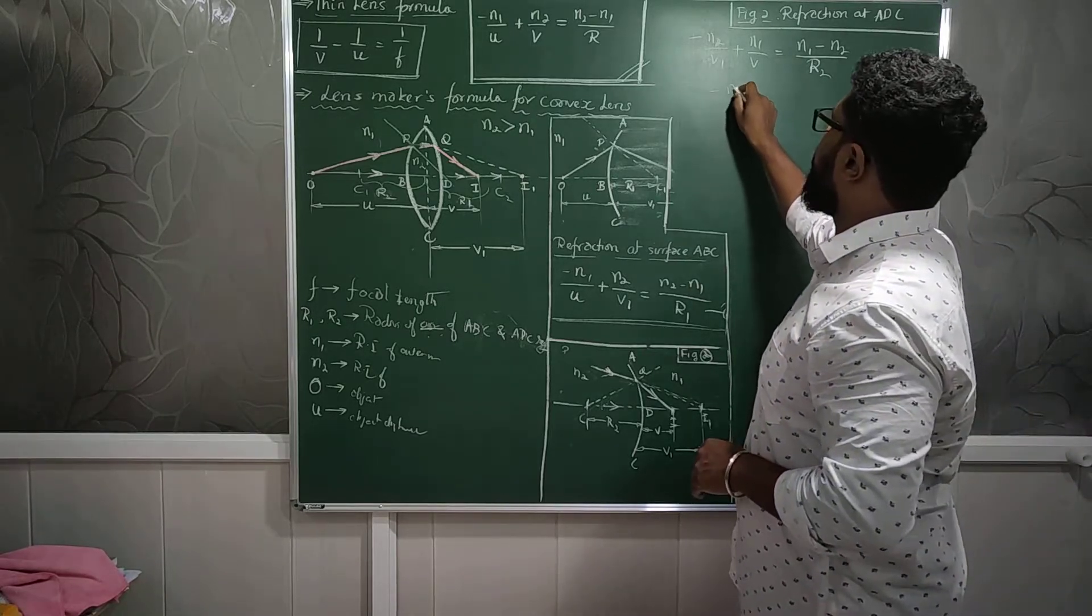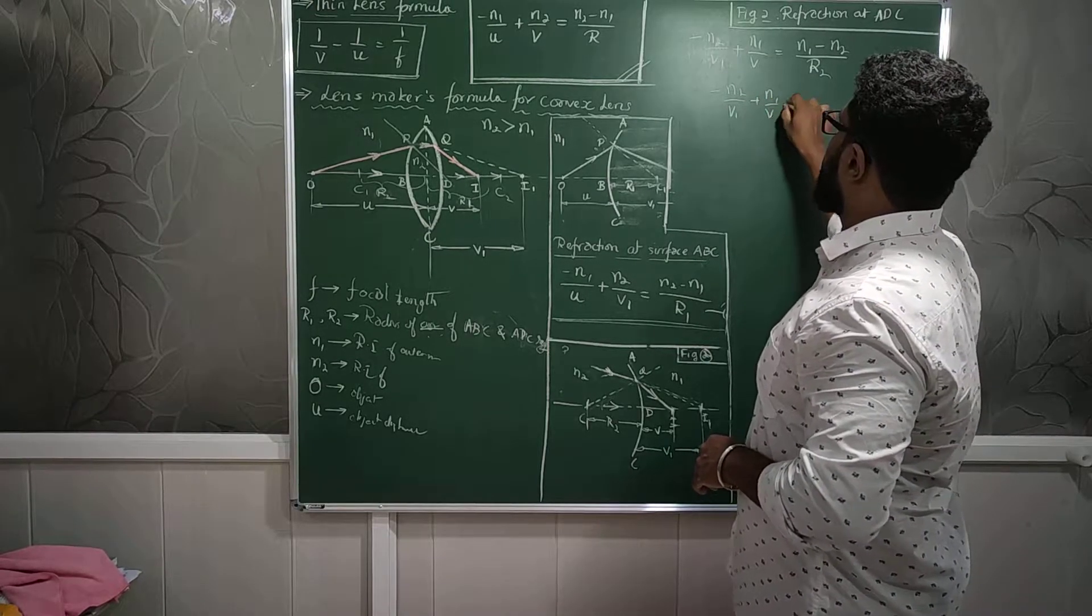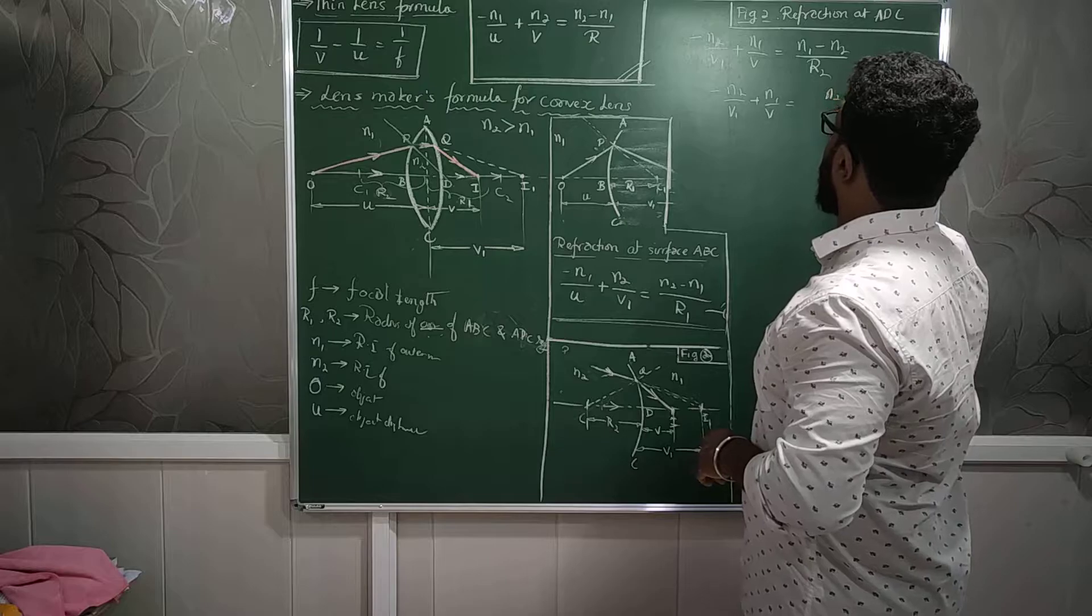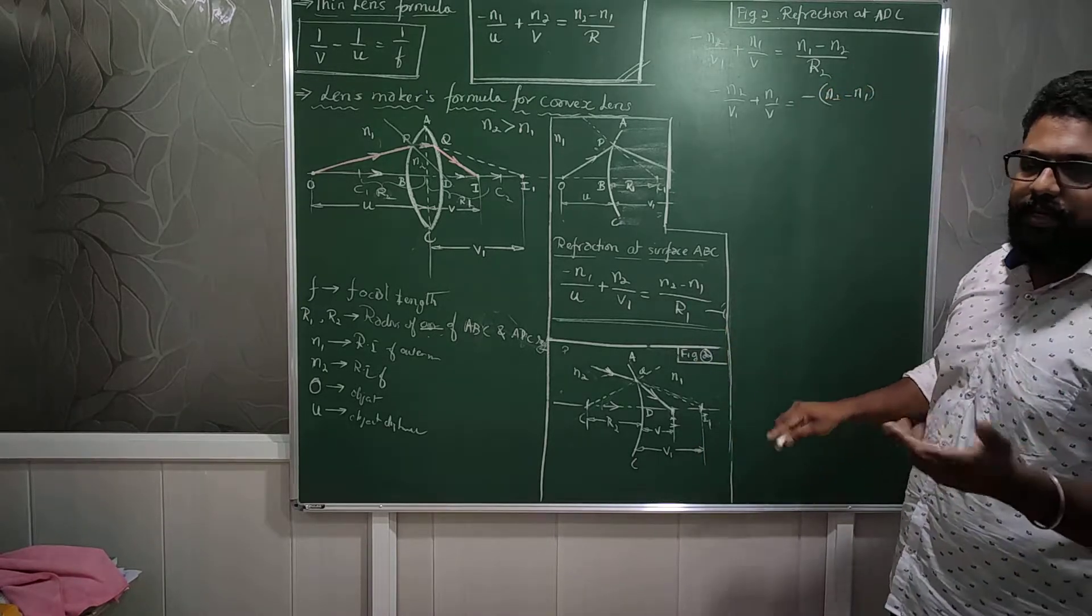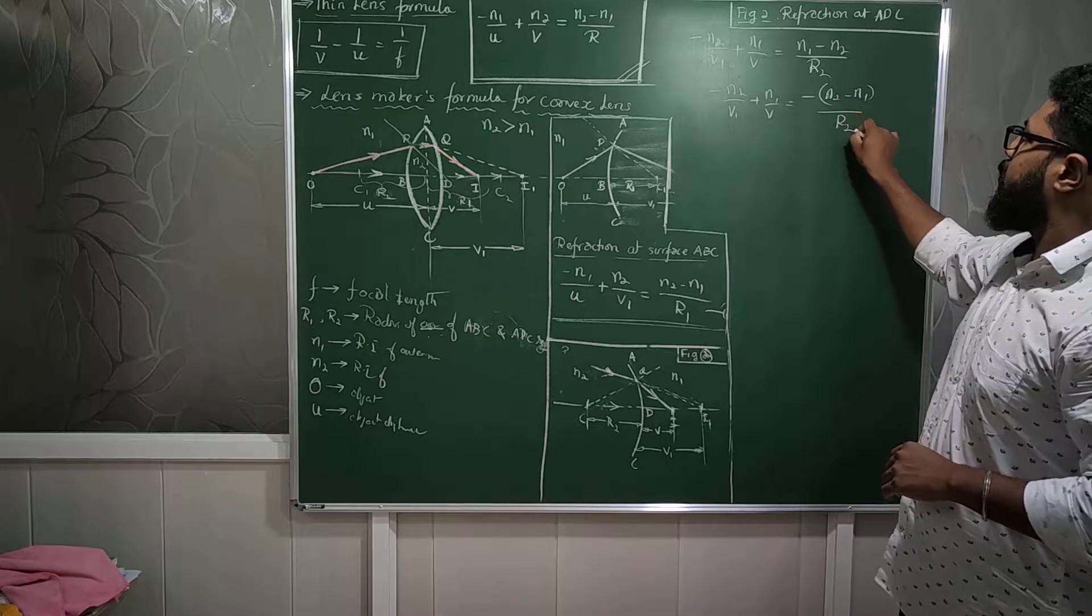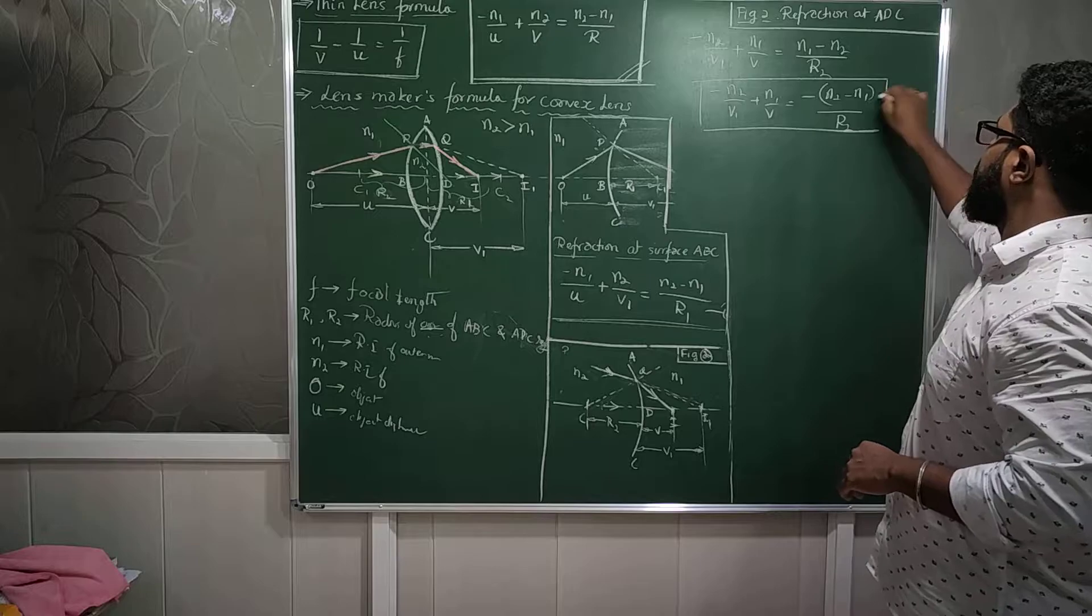So I am just going to keep it like that and interchange their positions as N2 minus N1. When I do that, interchange positions, the negative sign comes out. Simple mathematics. R2. And this is the equation which I am considering it to be as equation number 2.